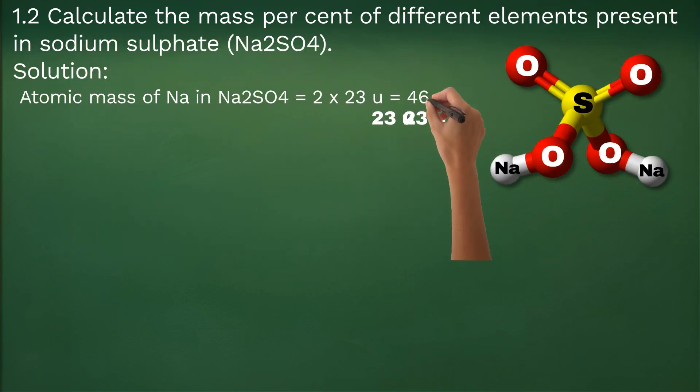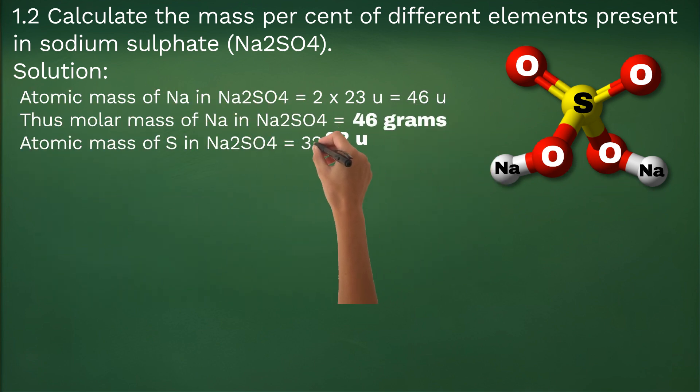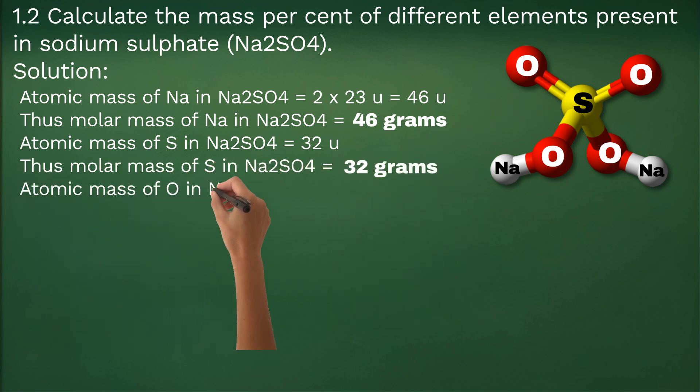Similar to calculation in previous question, molar mass of sodium in Na2SO4 comes out to be 46 grams, of sulfur 32 grams, and of oxygen it comes out to be 64 grams.